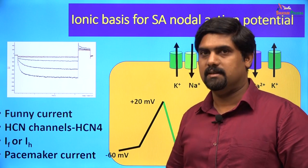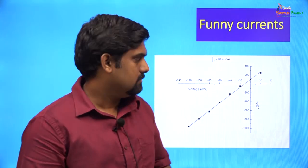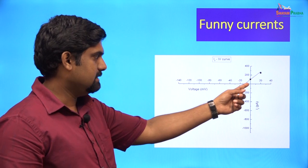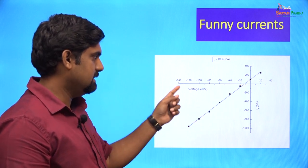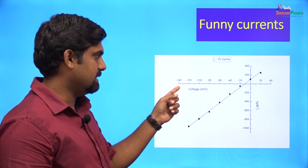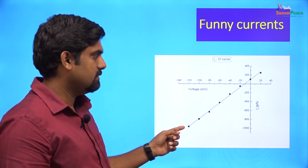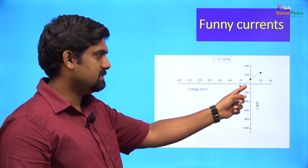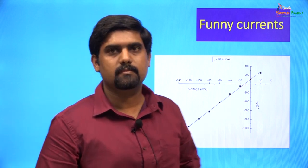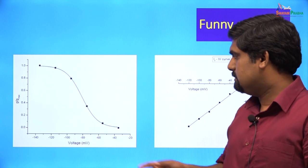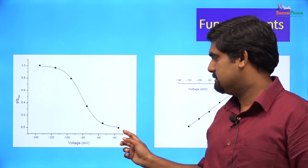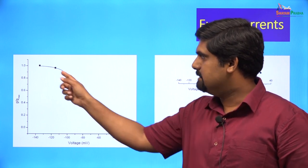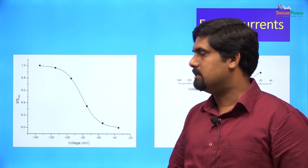The funny current is also known as the pacemaker current. The IV curve shows that the magnitude of the current increases as hyperpolarization increases to about minus 135 millivolts, and the reversal potential is about minus 10 millivolts. The activation curve shows that these channels open at about minus 35 millivolts, with maximum current attained at around minus 135 millivolts.